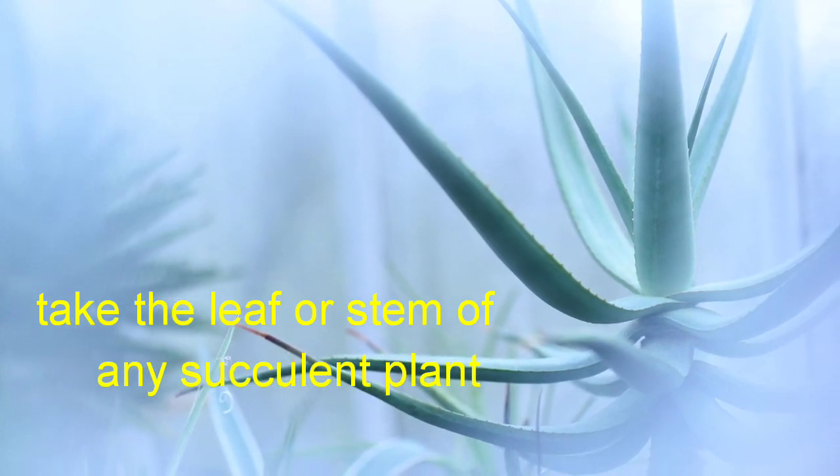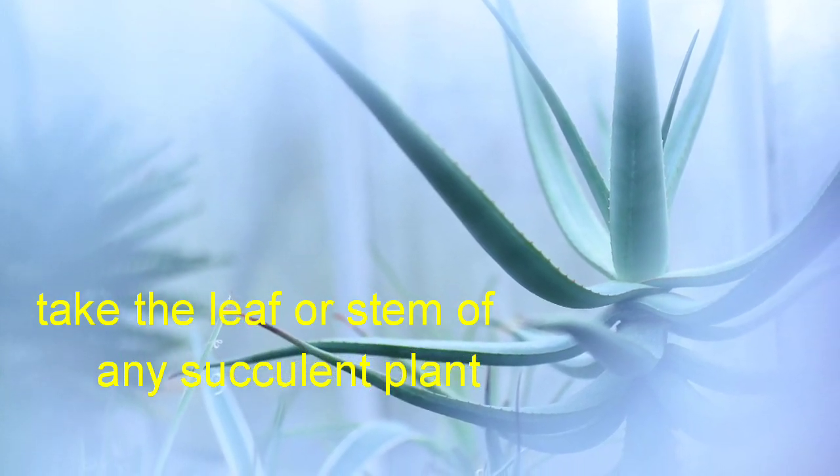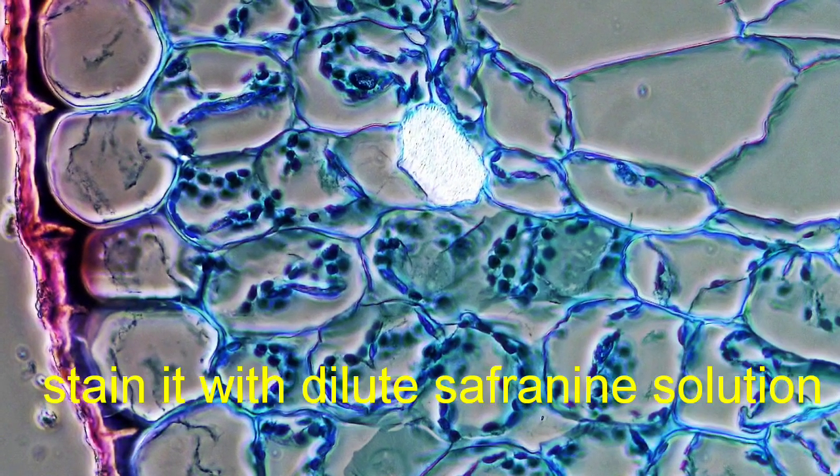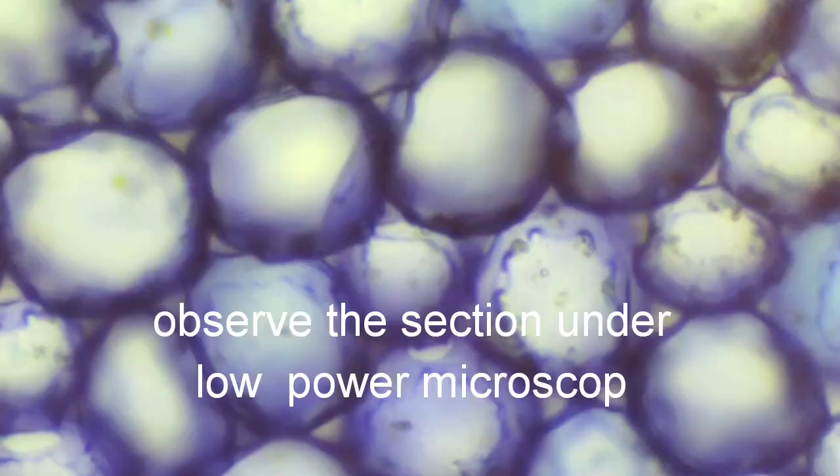Take a leaf or stem of any succulent plant. Take a thin cross section and stain with safranin. Observe the section under low power microscope.